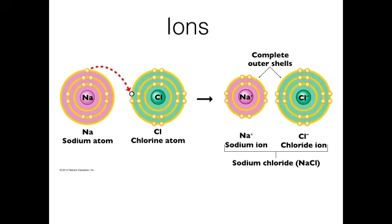Remember, there are two ways to get a full outer shell: you can fill up your shell by gaining electrons, or you can give away electrons so your outer shell is empty — and an empty shell isn't there; the shell beneath it was already full. So there's a way for these atoms to become stable: sodium will give up an electron to chlorine. Sodium now has a full outer shell because it lost the one in its outer shell and reverts, and chlorine now has a full outer shell. Both are very stable, satisfied — except they're not actually called atoms anymore, because atoms by definition have no charge. These are now called ions.